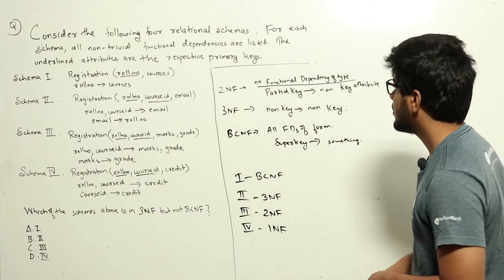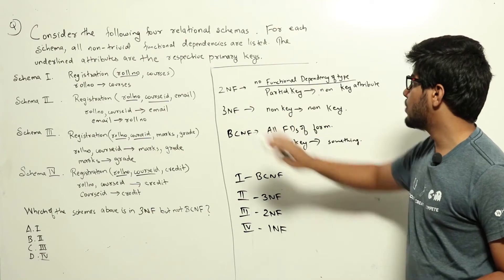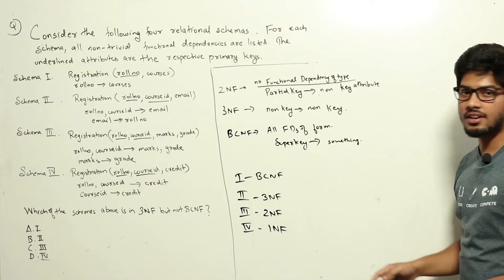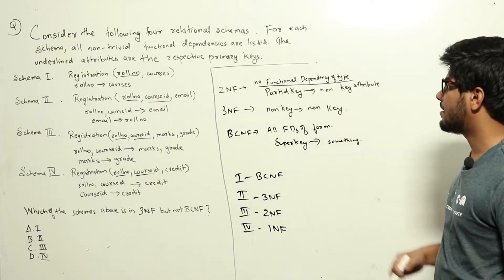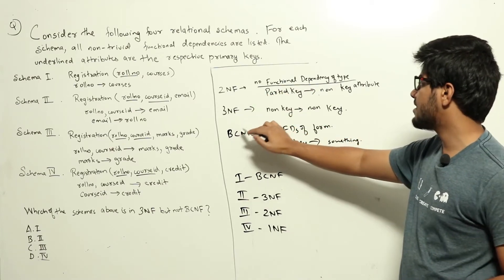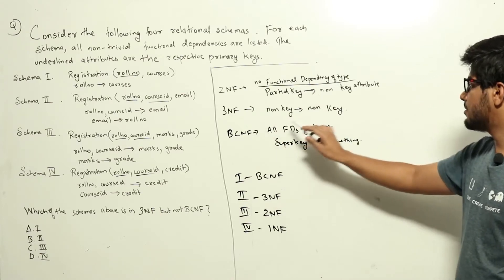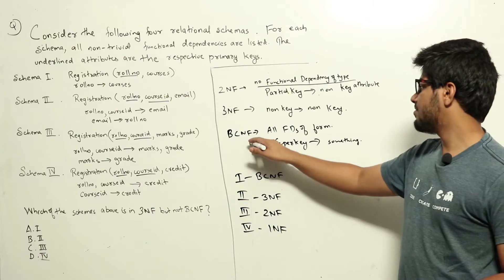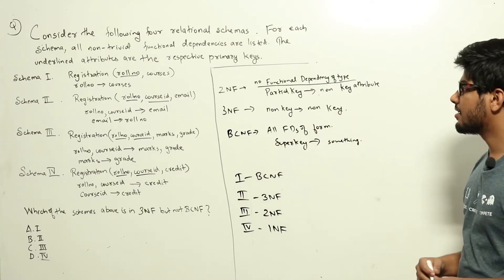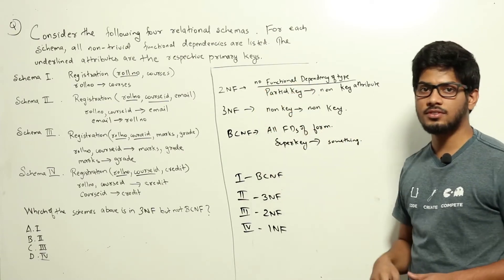Let's go through each one by one. For a schema to be in 2NF, none of the functional dependencies should be of the form partial key to a non-key attribute. The condition for 3NF is that none of the functional dependencies should be of the form non-key attribute to a non-key attribute. For BCNF, all functional dependencies should be of the form super key to something.